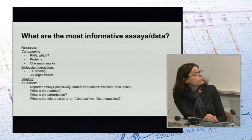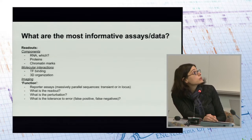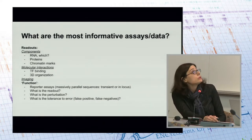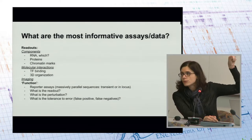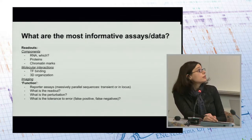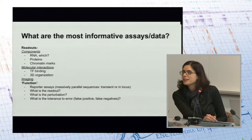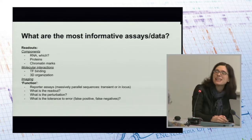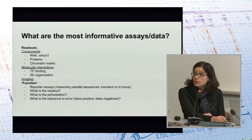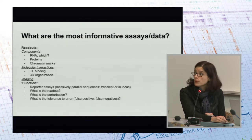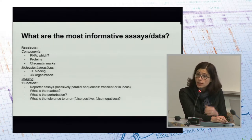There is a question of what are the most informative assays or data. We heard pitches for different types of readouts. On the side of components, we've heard about RNAs — mRNAs being one type — and renewed focus on proteins, the value of chromatin marks, and others. There is the issue of molecular interactions: transcription factor binding to their targets raised huge enthusiasm when for a moment we believed we had 800 validated antibodies, and then they were gone. But they will come. Issues in the 3D organization of the genome are really in the wheelhouse of genomics. Imaging is not, but seems to be a great emerging opportunity, including imaging coupled to sequencing-based readouts.